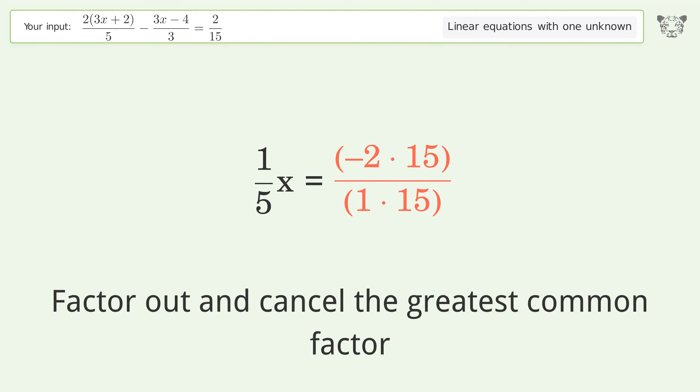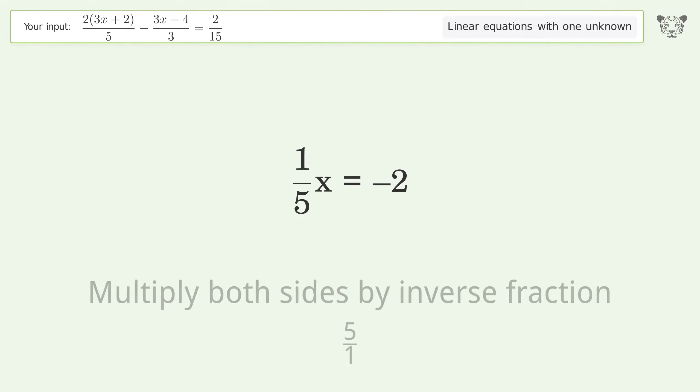Common factor. Isolate the x. Multiply both sides by inverse fraction 5 over 1.